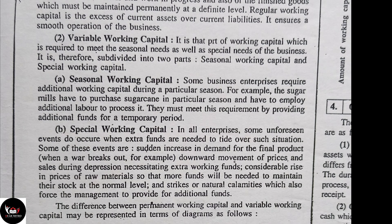Another type is special working capital. Sometimes there are unfortunate situations — the best example is COVID. During COVID, there was no regular production, but medical companies had to provide supplies like injections and syringes at a much higher scale. At that time, demand spiked and money was needed urgently. Companies used their savings kept aside as special working capital. Every company keeps savings for such unfortunate events — COVID, natural calamities — when demand suddenly needs to be met. So special working capital is used only during special times.